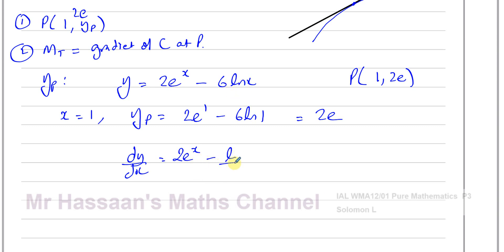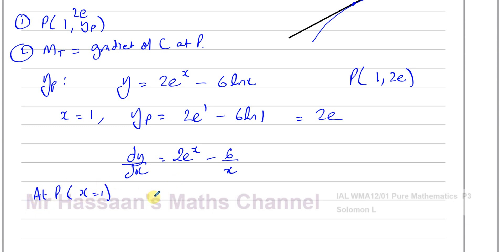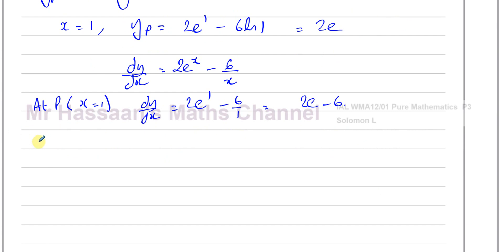So the derivative of -6 ln(x) is -6 times 1/x, which is -6/x. That's the gradient function: dy/dx = 2eˣ - 6/x. At P, when x equals 1, dy/dx equals 2e to the power of 1 minus 6 over 1, which is 2e minus 6. So the gradient of the curve at point P is 2e minus 6.